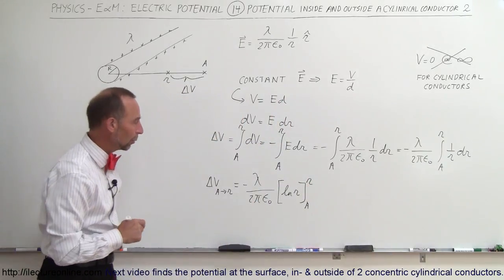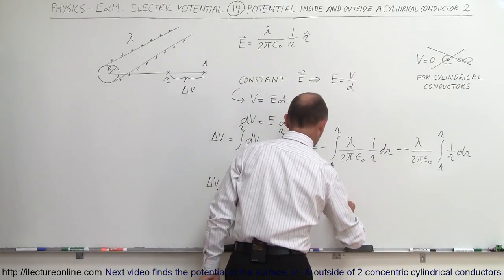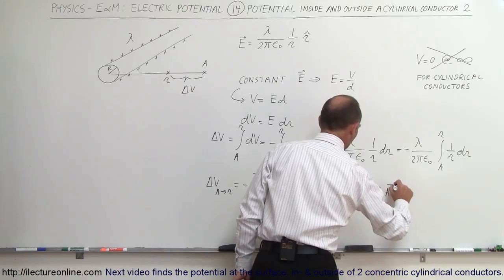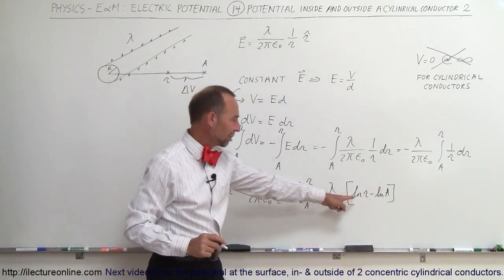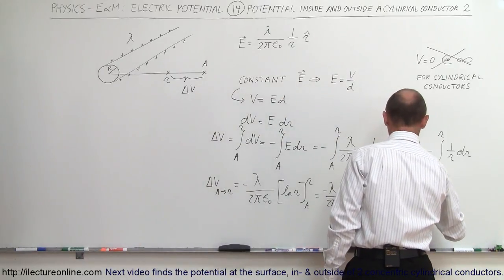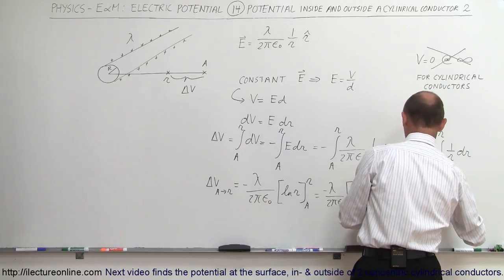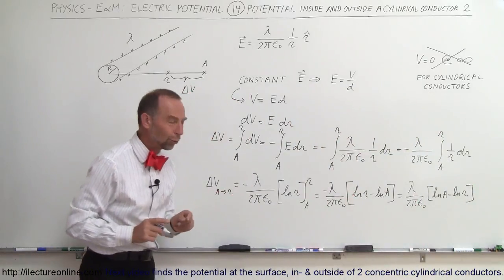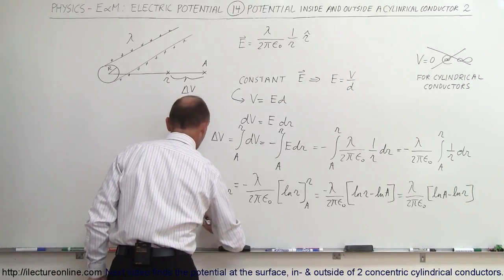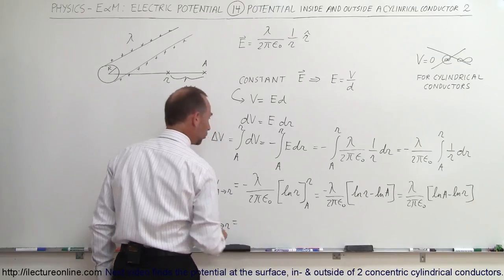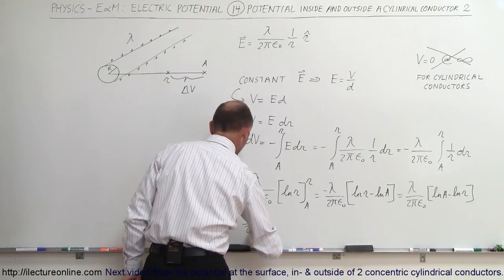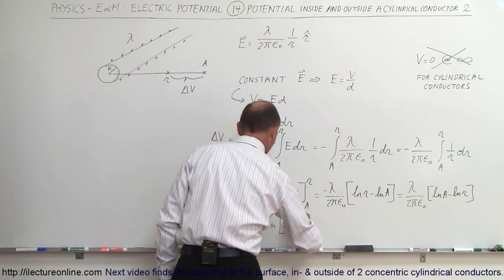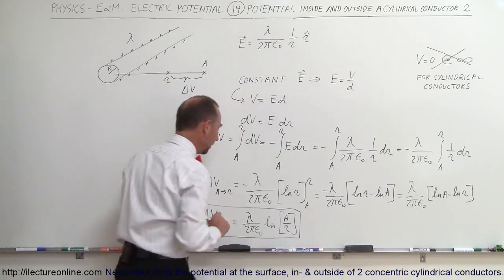The change in potential going from A to R is equal to minus lambda divided by 2π ε₀, times the natural log of R evaluated from A to R. We plug in the upper limit and then the lower limit, giving us the natural log of R minus the natural log of A. Then we get rid of the negative sign by switching these two around. Applying the rules of logarithms, delta V equals lambda divided by 2π ε₀ times the natural log of A over R.